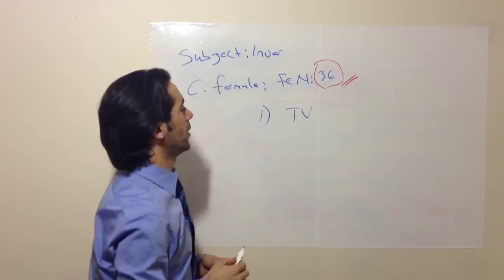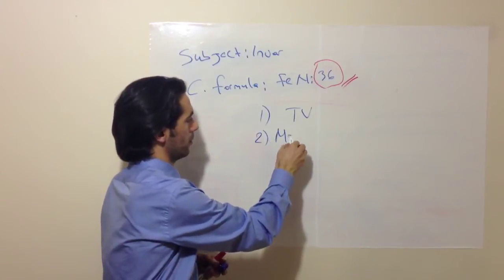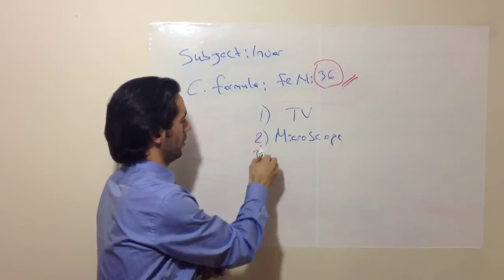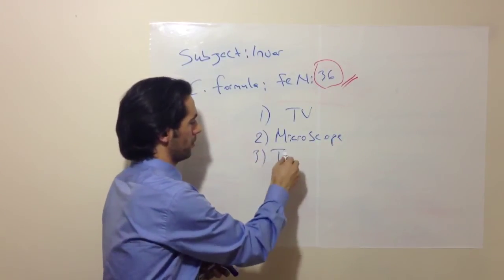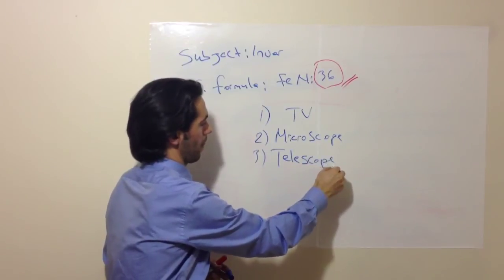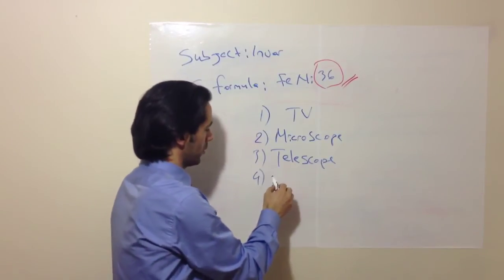I said before, measuring systems such as microscope, vice versa, telescope. And final example is electronic circuits.